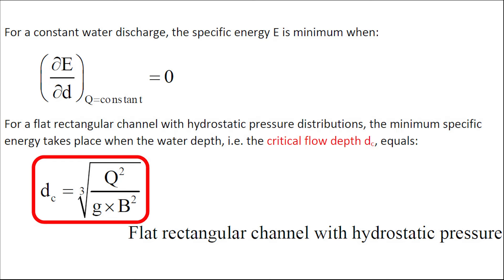For a constant water discharge, the specific energy is minimum when the variation with water depth of the specific energy, for a constant discharge, equals zero. For a flat rectangular channel with hydrostatic pressure distribution, the minimum specific energy takes place when the water depth, the critical flow depth dc, equals the cubic root of q squared over g.